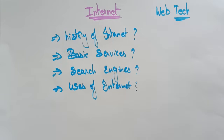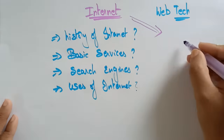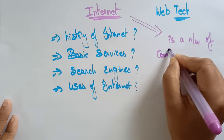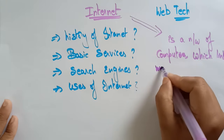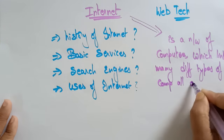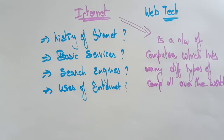In this video, I want to give an introduction to the internet: what is the history, and what are the basic services provided by the internet. Let's see the definition of the internet. Internet is a network — obviously it is a network of computers — which links many different types of computers all over the world.